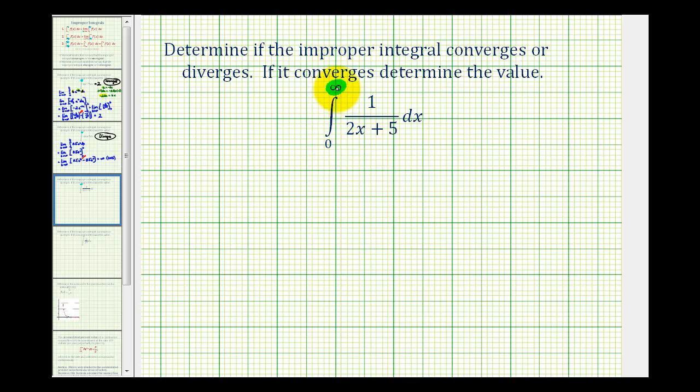So we're going to replace this with b and then take the limit as b approaches infinity of this definite integral. So we'll have the limit as b approaches positive infinity of the integral from zero to b of one divided by the quantity two x plus five dx.